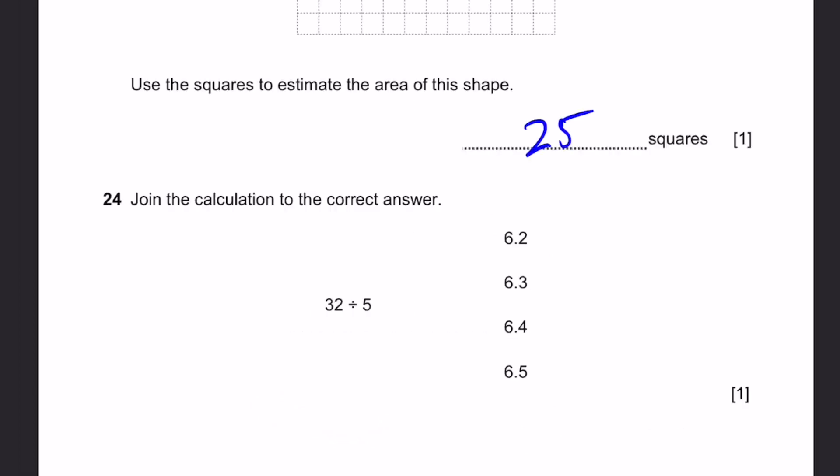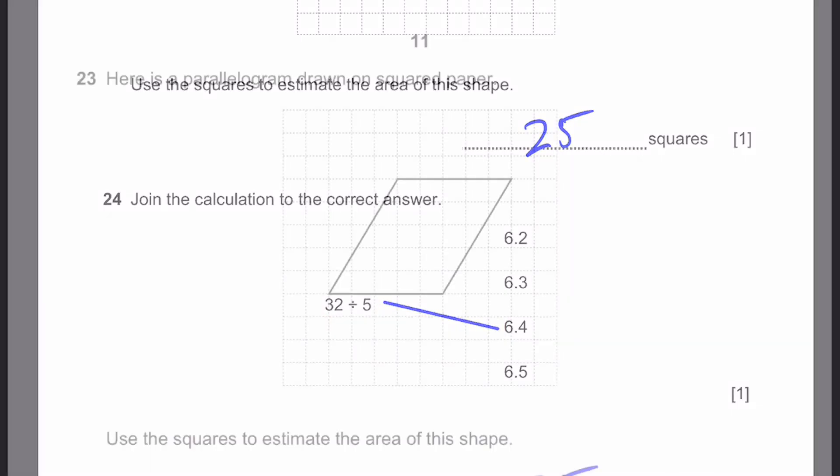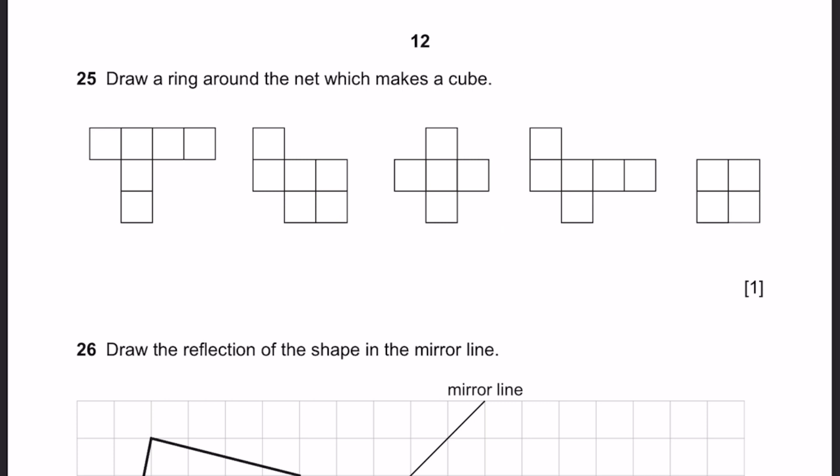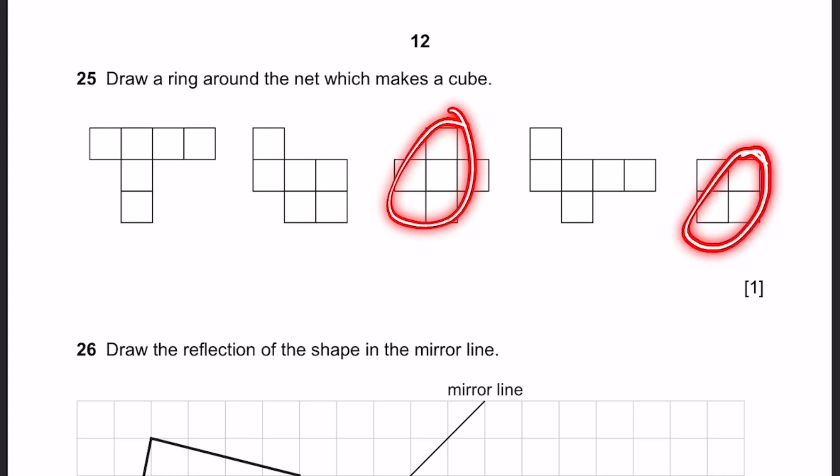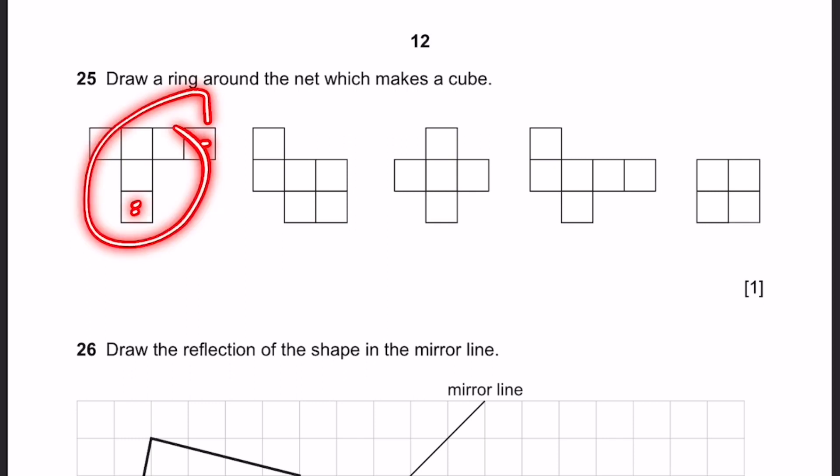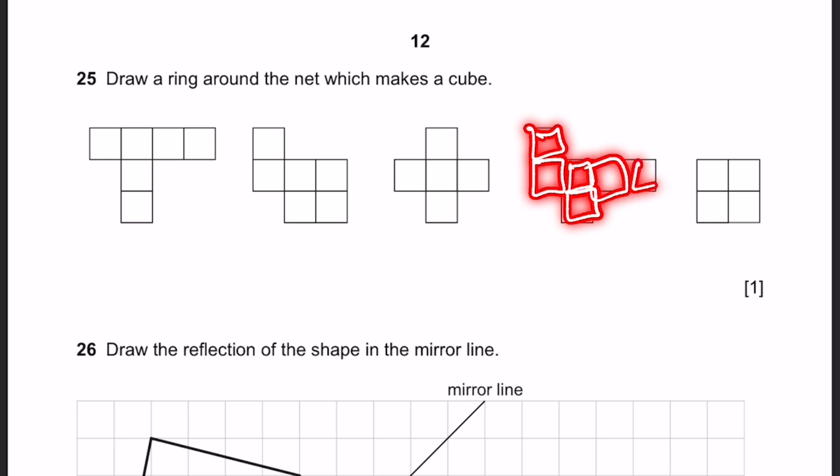Question 24. Join the calculation to the correct answer. 32 divided by 5. That will be 6 and 2/5, converting to a fraction. That equals 6.4 as a decimal. So you can draw a line here. Question 25. Draw a ring around a net which makes a cube. These two do not have six faces. This one, these two cubes will overlap on each other. This one, these two cubes will overlap on each other. Only this one actually makes a cube. Since these two will be the side faces, these two can be top and bottom, these two can be front and back. So we can draw a ring around this one.